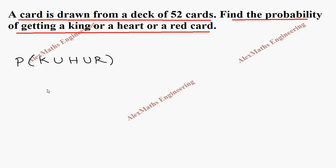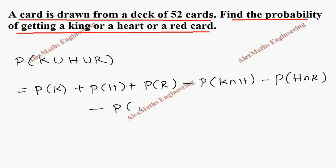We are going to apply the formula. It is P of K plus P of H plus P of R minus P of K intersection H minus P of H intersection R minus P of K intersection R plus P of K intersection H intersection R.